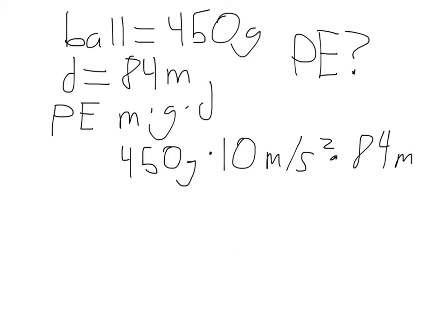Okay, now to find the potential energy, we're going to need to convert grams into kilograms. So we're going to take 450 and divide that by 1,000. That's going to give us 0.45 kilograms.